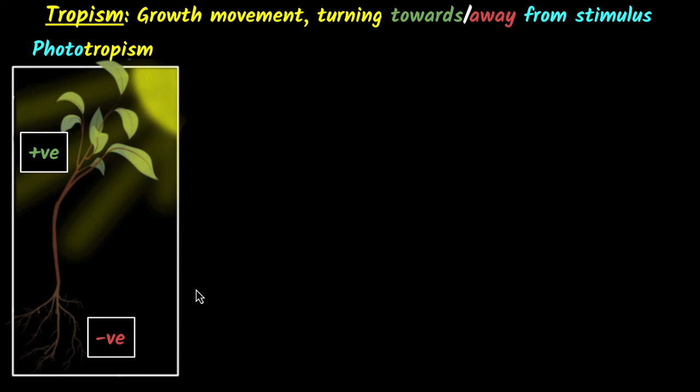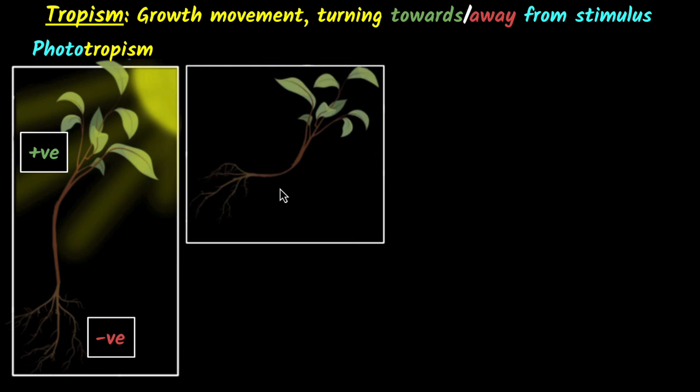All right, let's take another example. If you take a plant and you keep it horizontal, after a few days you will see that the shoot will grow up and the roots will grow down. This time the stimulus is not light. This time the stimulus is gravity. Since the plant is turning due to earth's gravity, it's called geotropism, geo for earth.